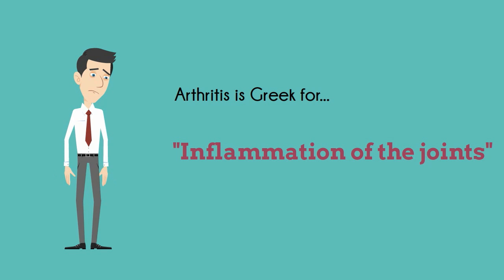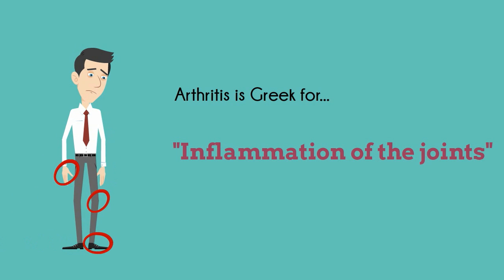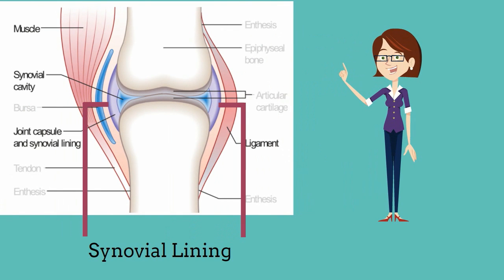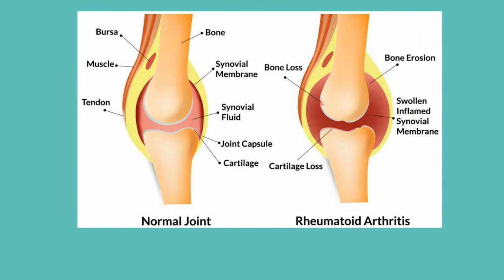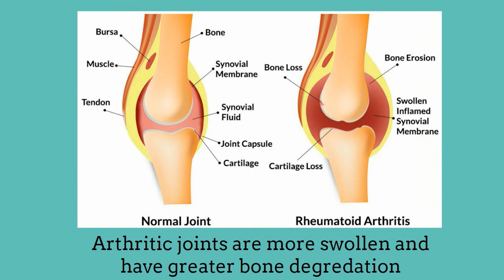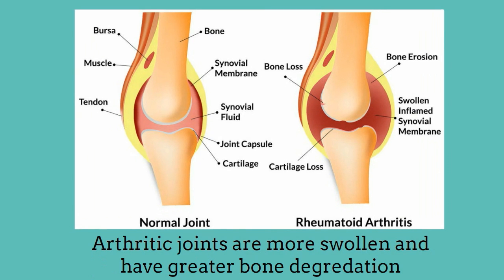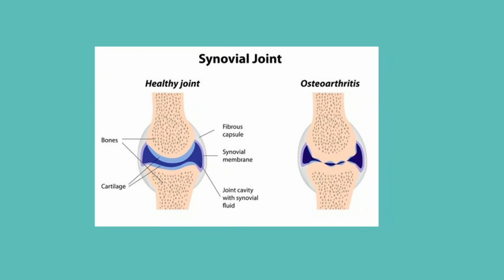Rheumatoid arthritis is common in joints such as your knees, fingers, and toes. Although the cause of rheumatoid arthritis is unclear, the disease is characterized by inflammation of the synovial lining of the joints. The synovial membrane is a matrix of connective tissue that lines the cavities of the joints and contains a synovial fluid.